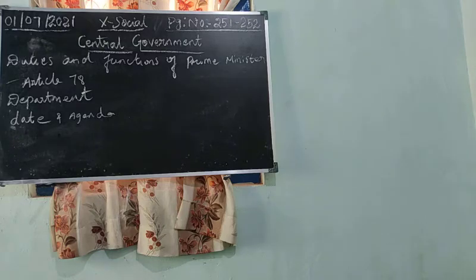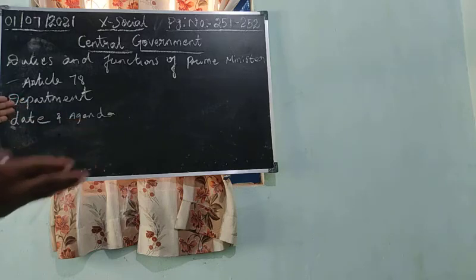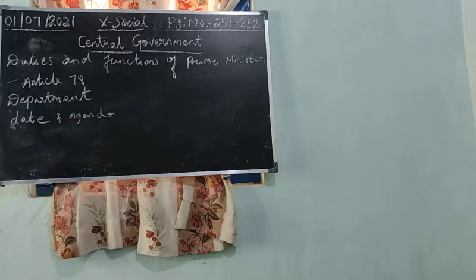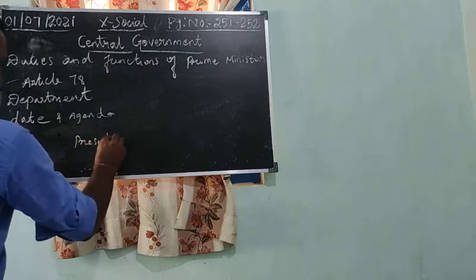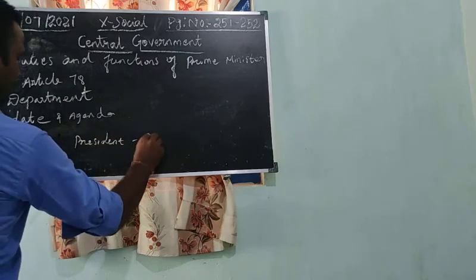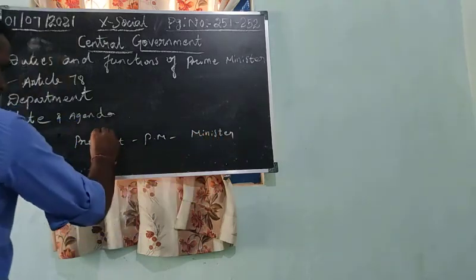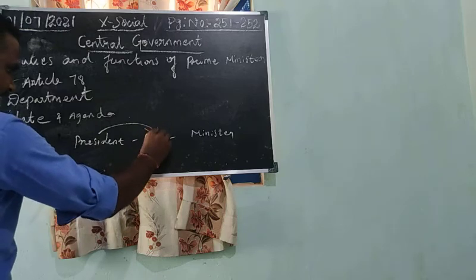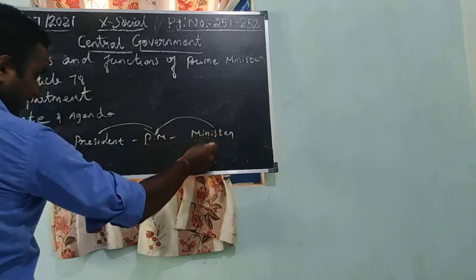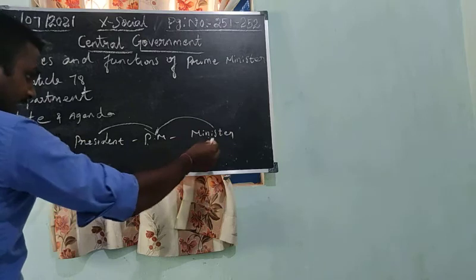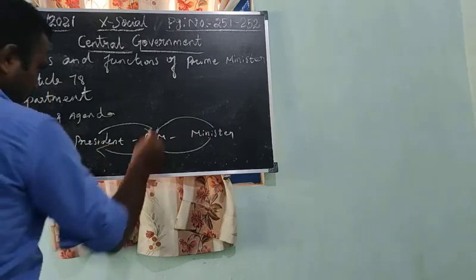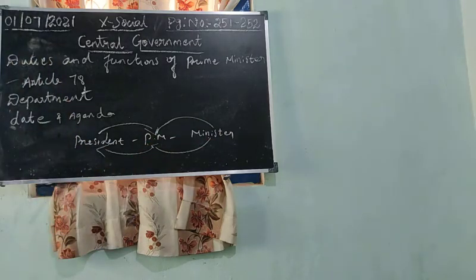The Prime Minister acts as a bridge between the President and the Ministers. If the President communicates anything, the Prime Minister conveys it to the Ministers. And if the Ministers take any decision or bring new legislation, the Prime Minister is responsible for discussing it with the President. All decisions of the Council of Ministers connected to Government Affairs, Union matters, and proposals for legislation are communicated through the Prime Minister.